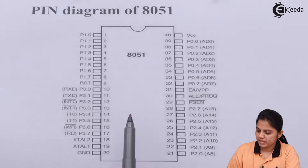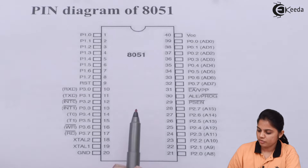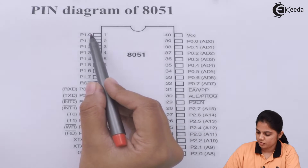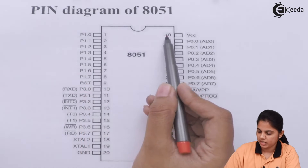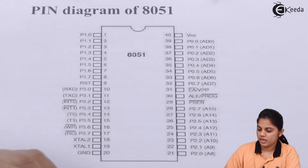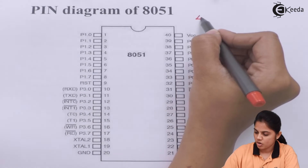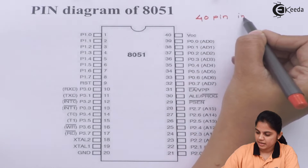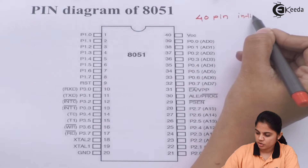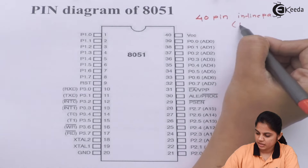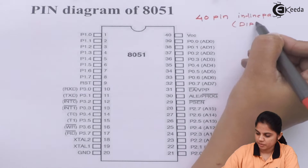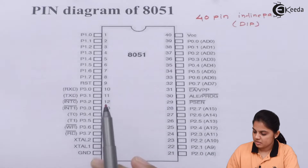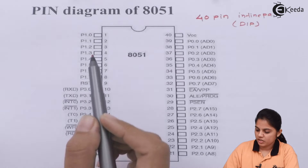Here is the pin diagram — it's a 40-pin package. You can see pin numbers from 1 to 40. This is called a 40-pin dual inline package, available in DIP. All 40 pins are shown with different names.